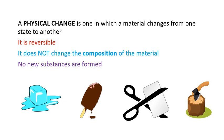For example, when frozen apple juice is thawed, it melts from a solid to a liquid. If you refreeze that juice, it will turn back into a solid apple juice. Its composition will remain the same in all states. Nothing new is being formed — it is still apple juice.